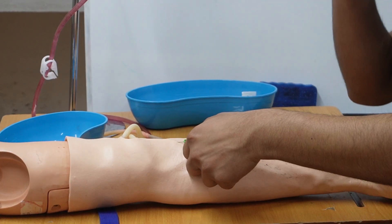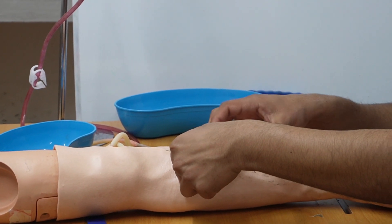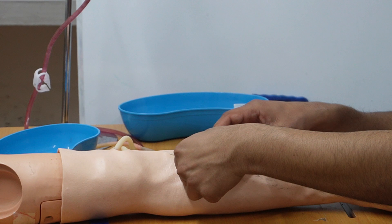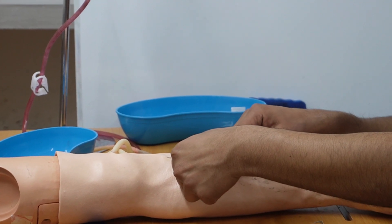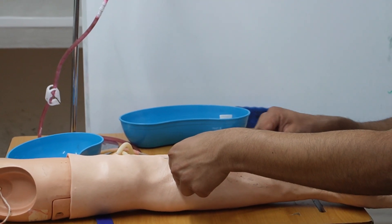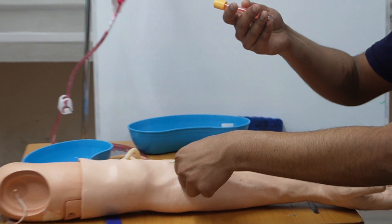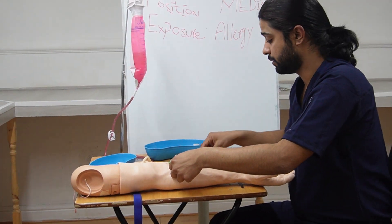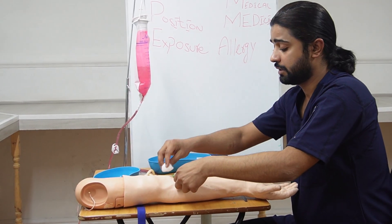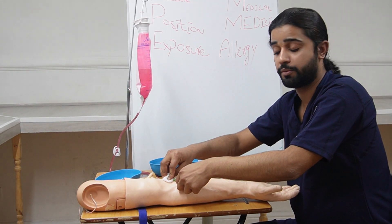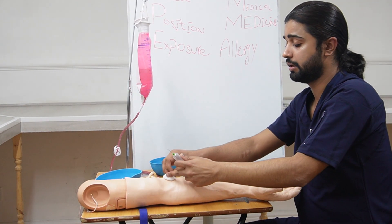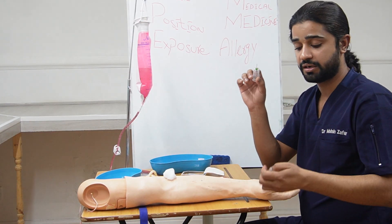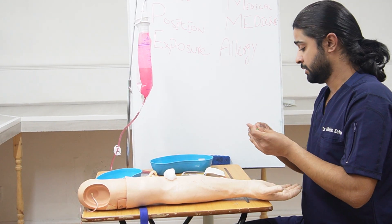Loosen the tourniquet, take the blood tube and insert it — blood will start coming. After that, take it out and rotate it 180 degrees. Then take the needle out, let the patient know you are removing the needle, and ask the patient to press on it for one minute.